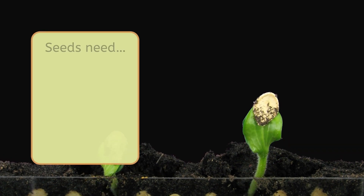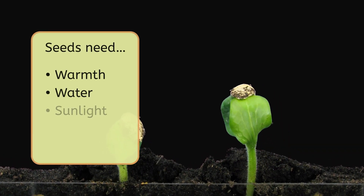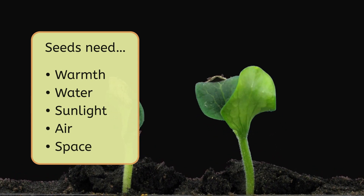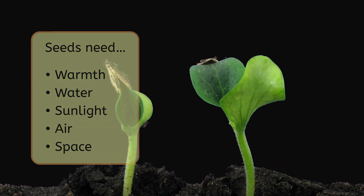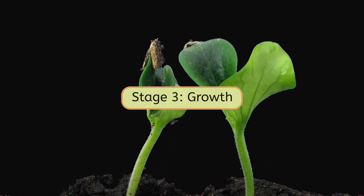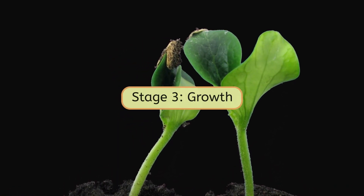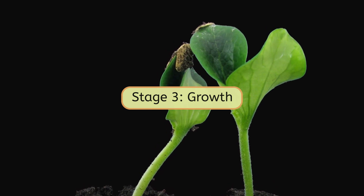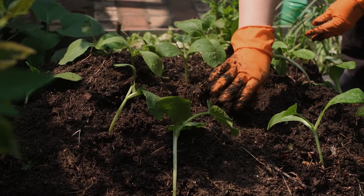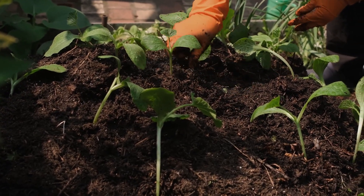Since Mia made sure this seed had warmth, water, sunlight, air, and space, it was able to germinate into a seedling. A successful germination will bring the plant to the growth stage. For flowering plants like this one, we sometimes call this the seedling stage. Now the plant will keep growing bigger and bigger as long as it continues to get the right resources. How do you think we can tell when the plant has grown to the next stage of its life?